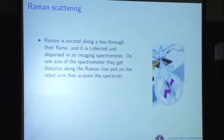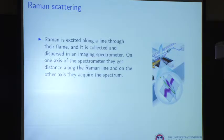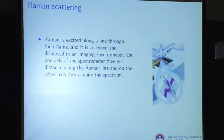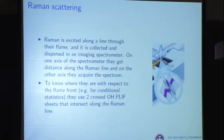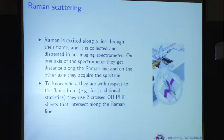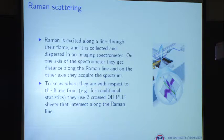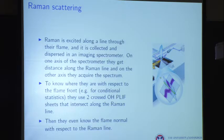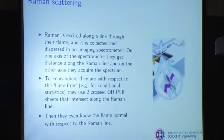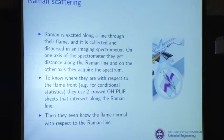They're exciting Raman along that 6 millimeter line, and what they really want to know is where the measurement locations are with respect to the flame front. So they have two crossed OH PLIF measurements at the same time - by crossing the OH PLIF they have a three-dimensional representation of where the flame is right at the line. The crossing between the two planes happens right at the line, so they know the flame normal with respect to that line. That way they can get conditional statistics on the flame, which is what you really need to know.